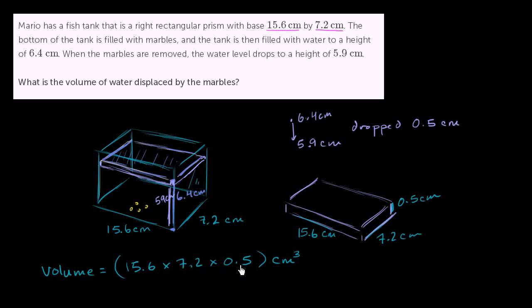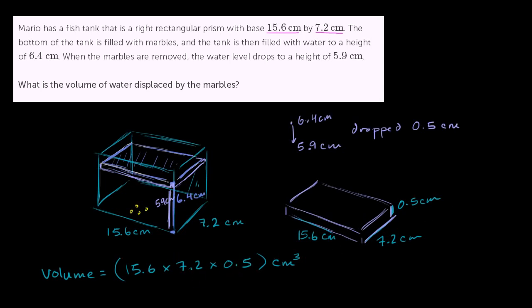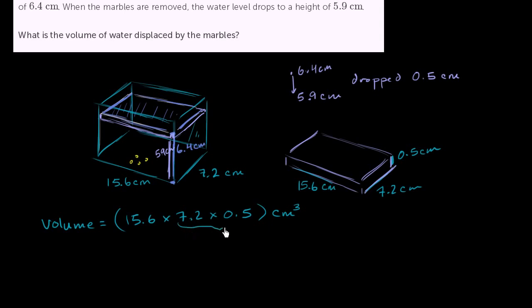Well, let's first multiply 7.2 times 0.5. We can do that in our head. This part right over here is going to be 3.6, essentially just half of 7.2. So then this becomes 15.6 times 3.6. So let me just multiply that over here: 15.6 times 3.6.